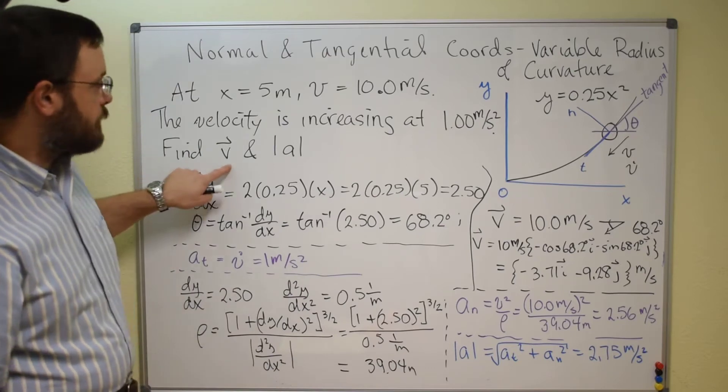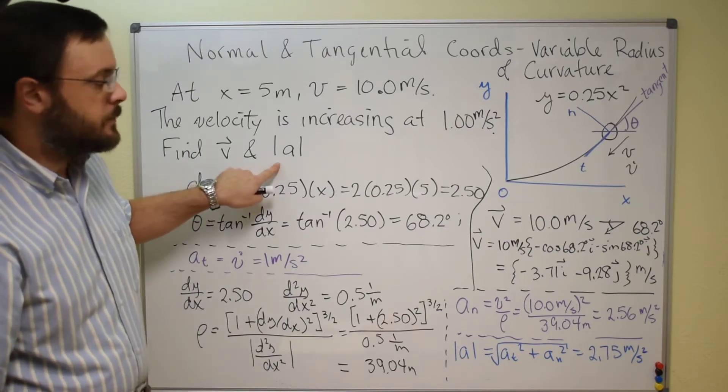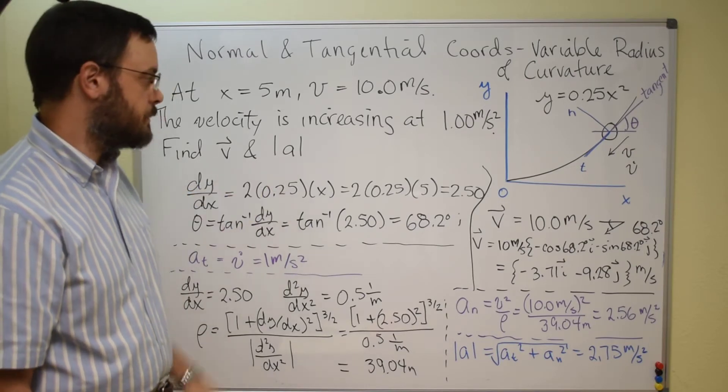We want to find the velocity, the vector velocity of the particle, and then we also want to find just the magnitude of the acceleration, but we don't have to find its direction.